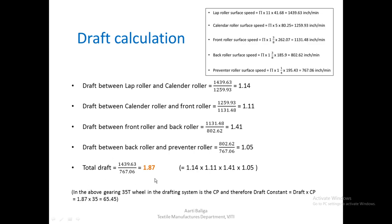We can calculate the total draft and verify it by multiplying all the intermediate drafts together — both methods give the same value. We can also calculate the draft constant as draft × count product (cp), and we obtain this value for the sliver lap machine from the gearing diagram.